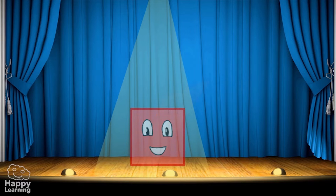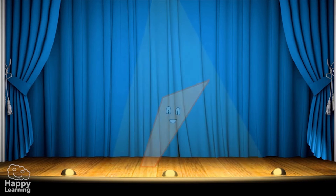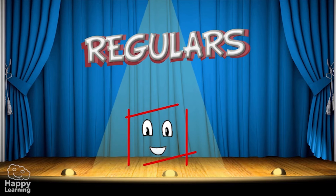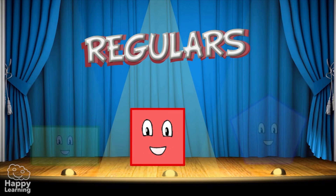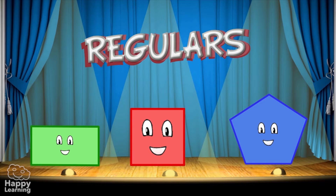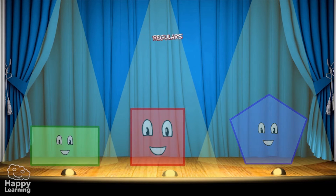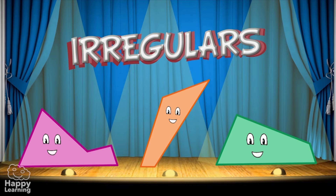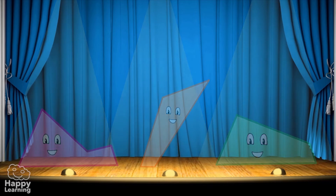There are many kinds of polygon, so we classify them in different ways. The first classification is whether they are regular or irregular. A polygon is regular if all its sides and angles measure the same as each other. These polygons are irregular because their sides and angles are not equal.